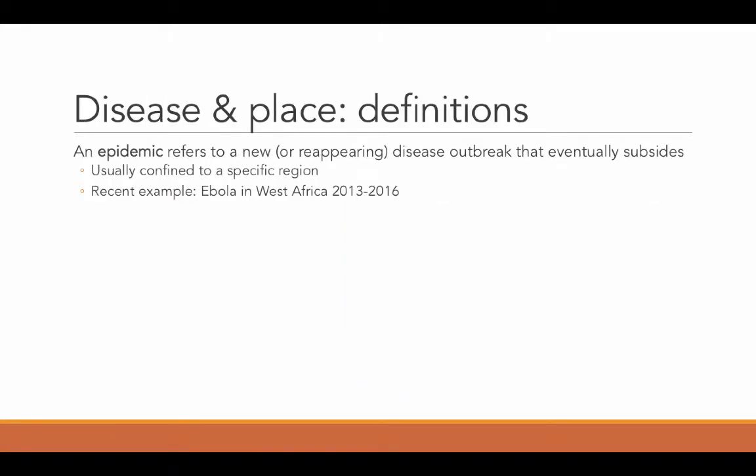The book also talks about different terms to describe a disease relative to the place that it occurs, using three different terms to describe types of diseases. One type would be an epidemic. This is when a disease is either new or it reappears, and it's an outbreak that eventually subsides. It's something that comes and then we expect it to go away relatively fast — over a period of years — and usually epidemics are confined to a specific region.